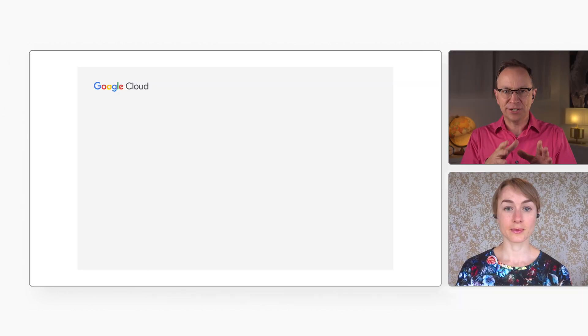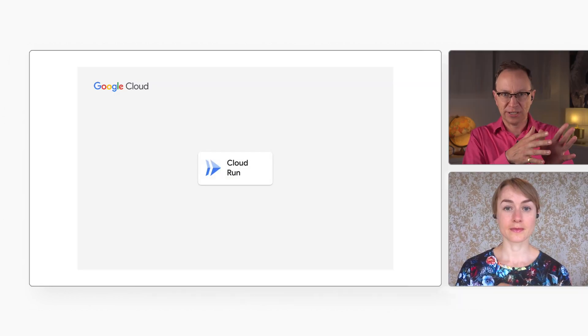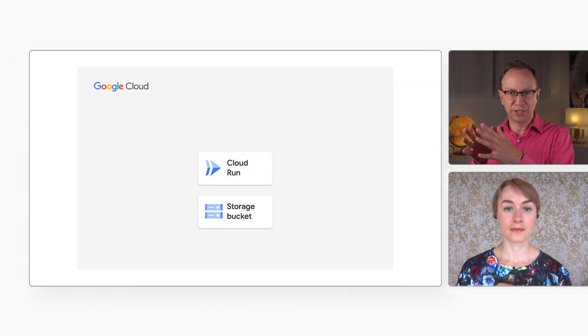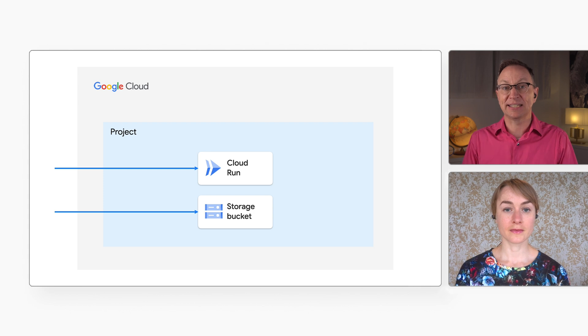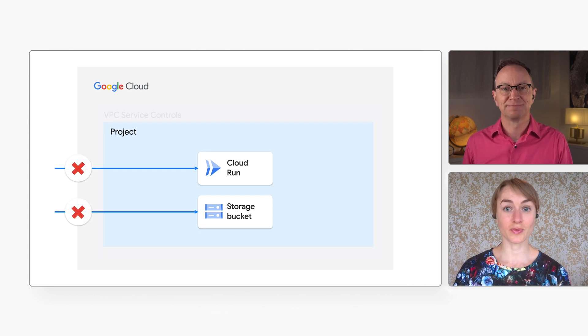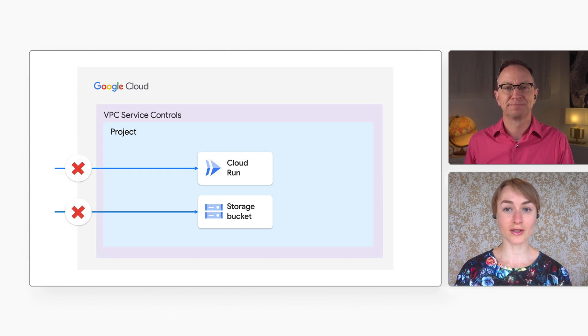Hi, Natalia. A customer sent me a security-related question the other day. What was it? They're using Cloud Run and Cloud Storage, and they want to increase security and prevent data exfiltration. Yes, they can use VPC Service Controls for that. Let me show you how.